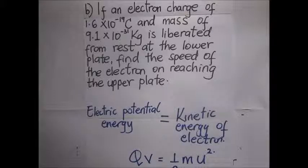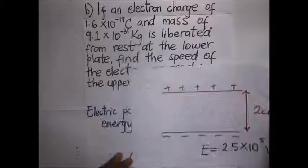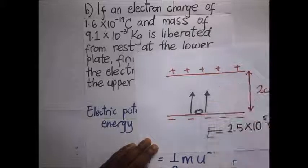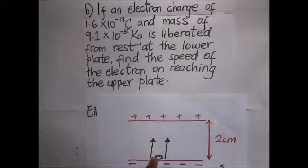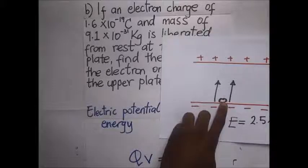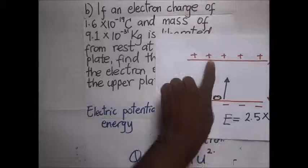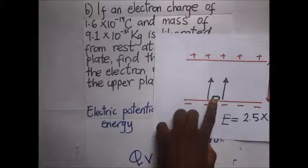If an electron with charge 1.6×10⁻¹⁹ and mass 9.1×10⁻³¹ kilograms is liberated from rest at the lower plate, find the speed of the electron on reaching the upper plate. The electron is liberated from the lower plate and moves towards the positive upper plate. Since the electron is negatively charged, it is repelled from the negative lower plate and pushed towards the positive upper plate.